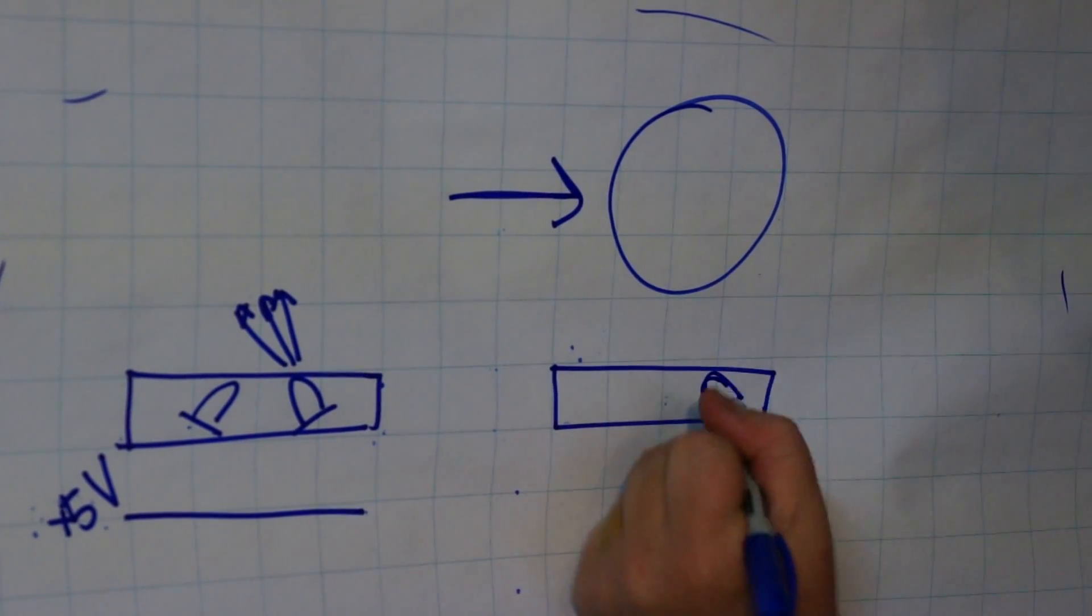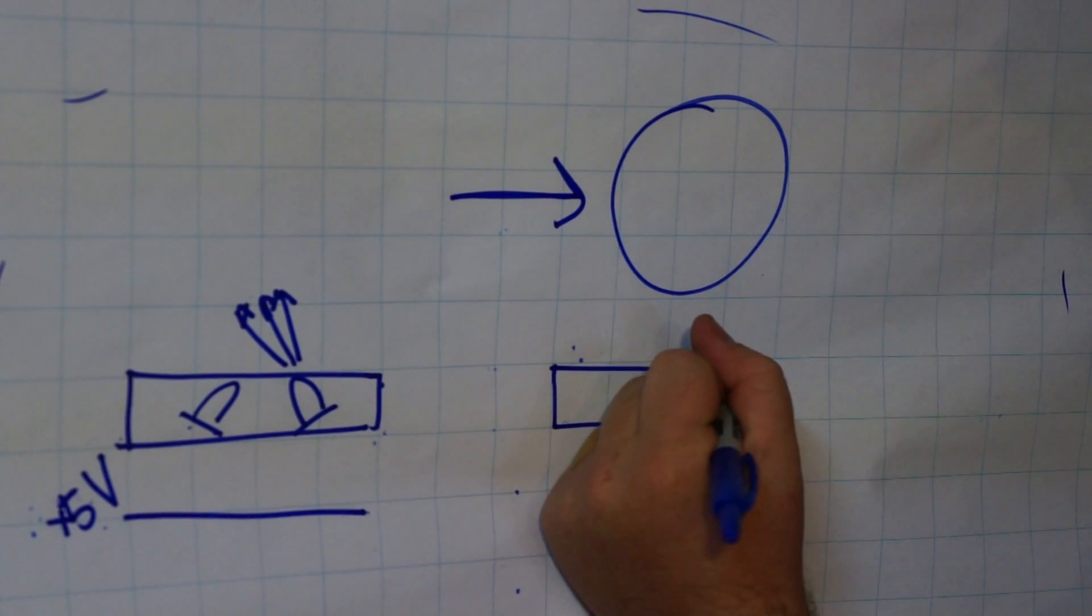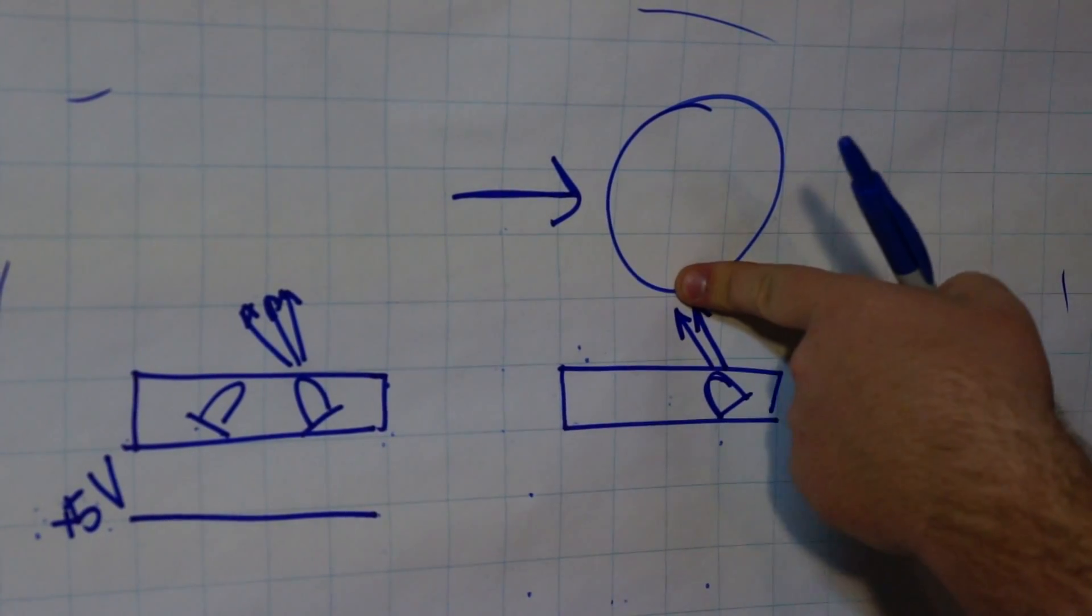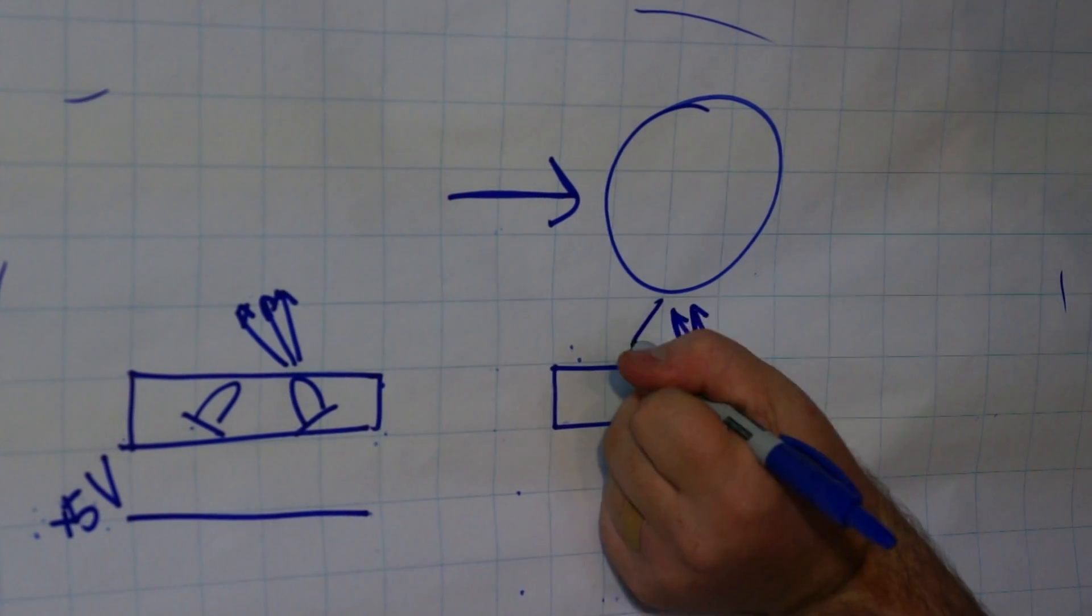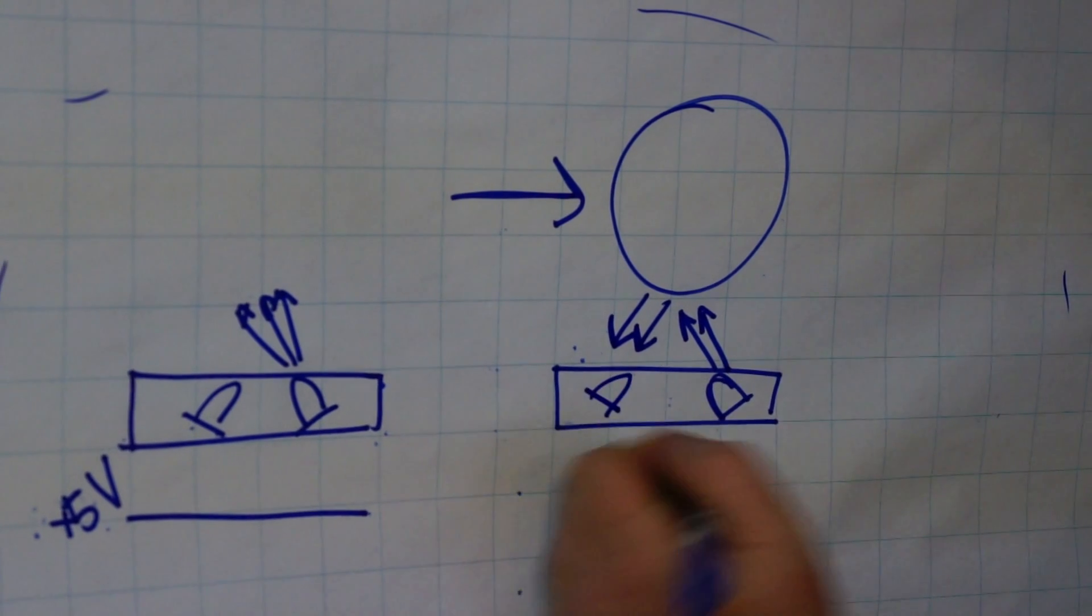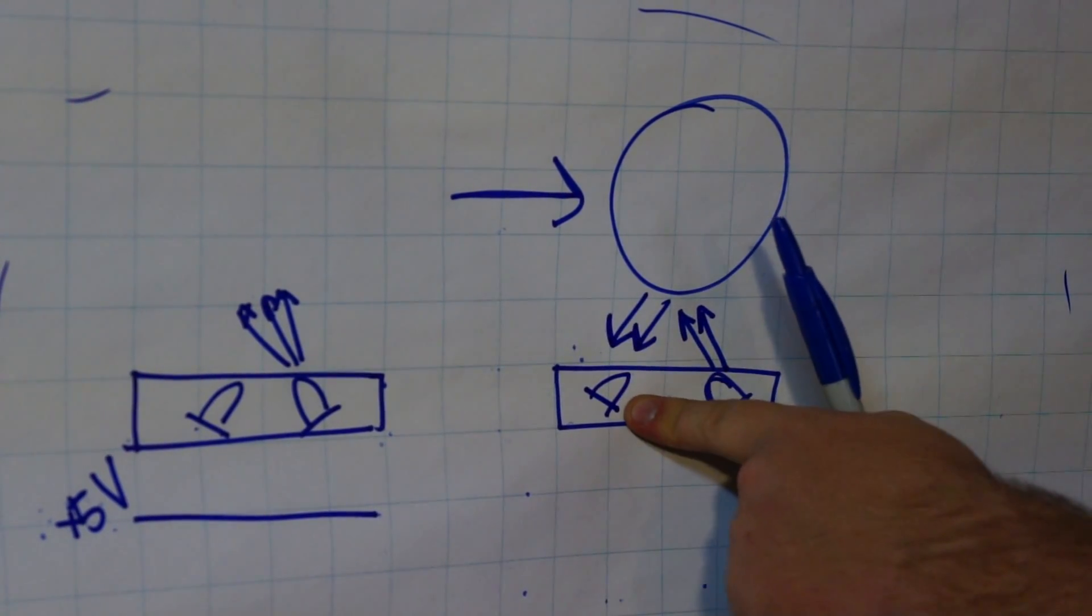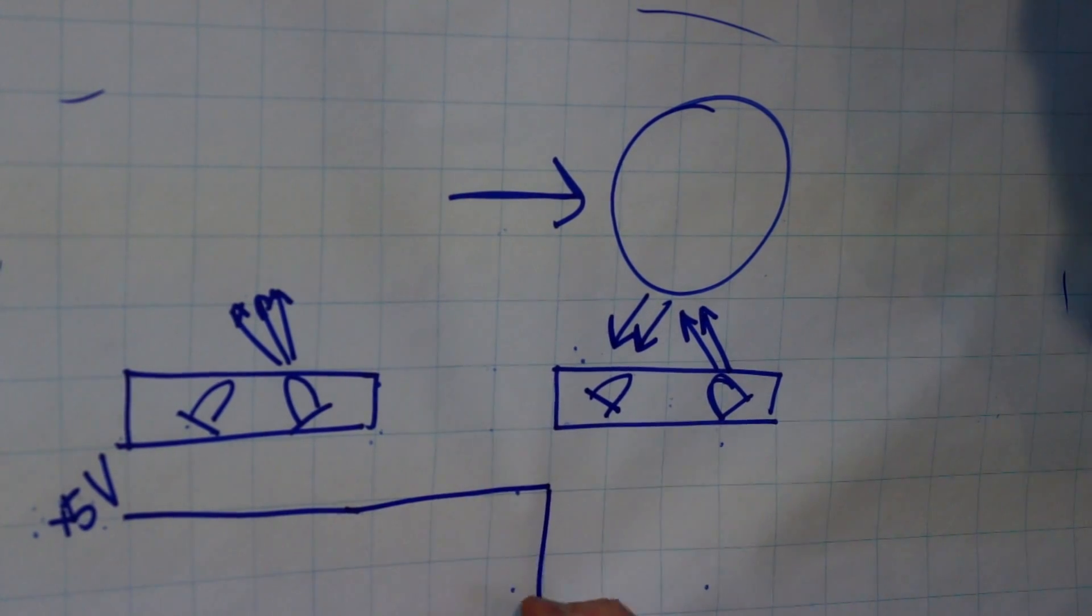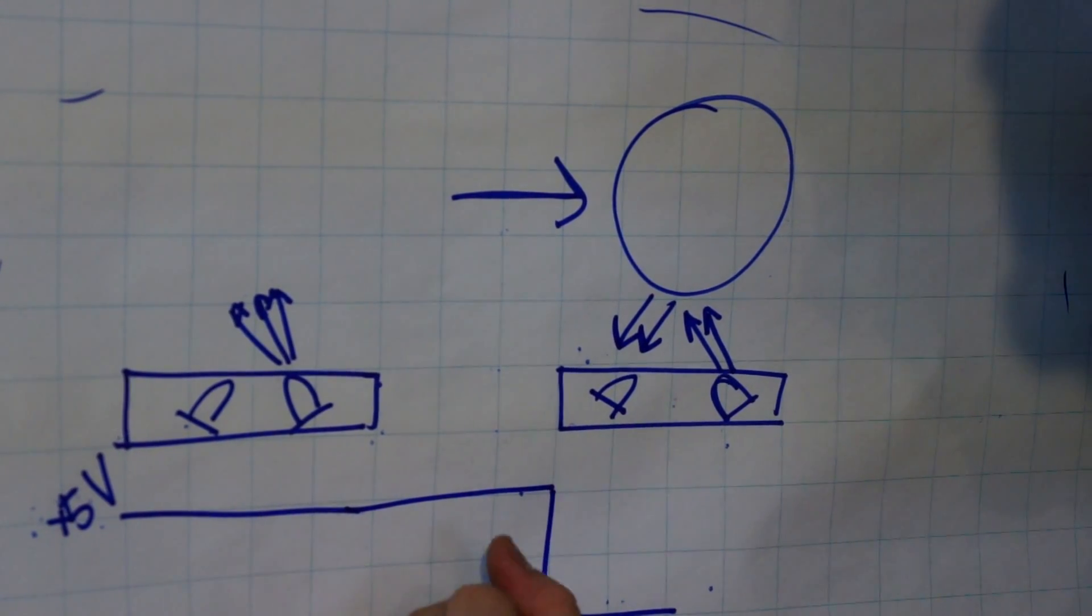So this LED that's emitting the infrared waves hits the pinball, then it gets reflected down, or bounces off, into this LED that's detecting the infrared waves. So this 5 volt signal drops down to 0 volts.